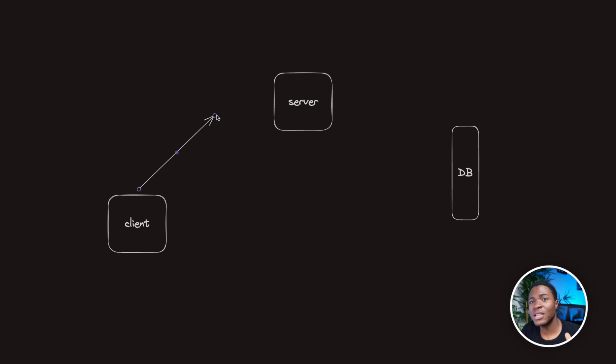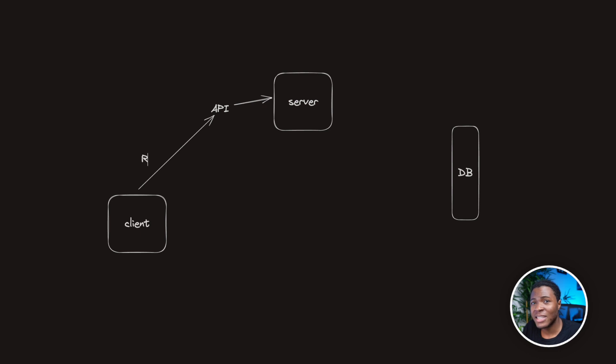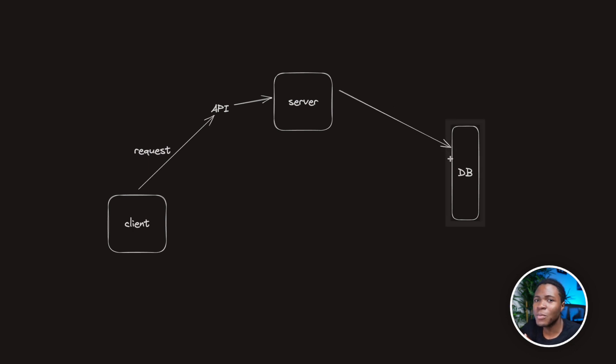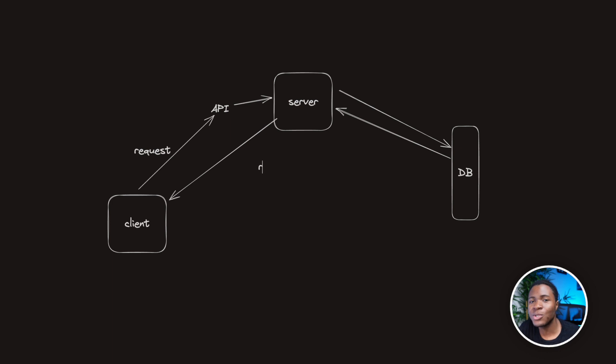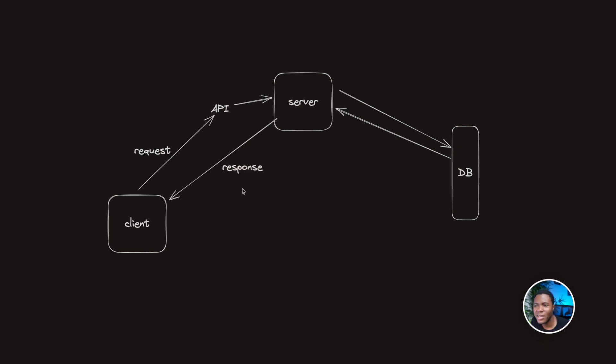When you are building applications, sometimes you would want to get data from a database — could be a list of users, a list of products, or whatever. Usually in settings like this, you'd have the front end, which displays the data to the user, and you'd have the backend, which provides an API address that the front end can make a request to. Then that backend server would be able to get data from the database and return it as a response to the request that the front end is making.